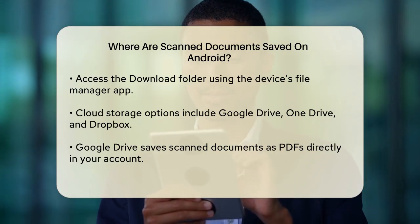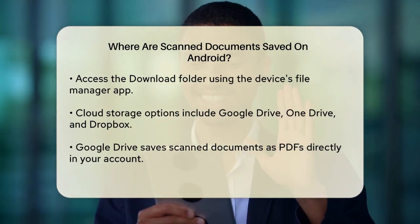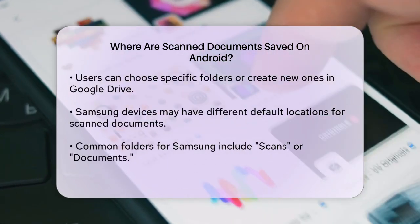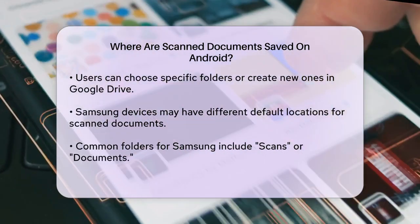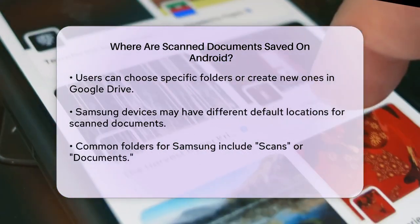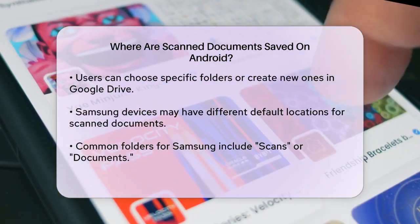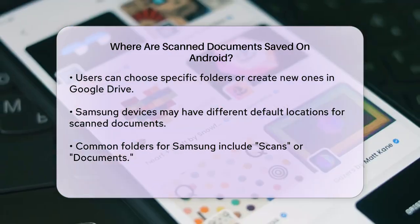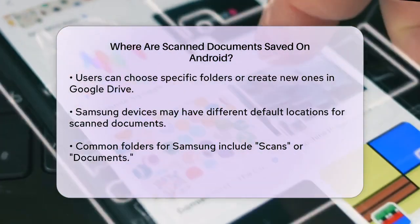On some Android devices, especially Samsung phones, the default scanning app might save documents in different locations. For example, it could save them in the device's internal storage under folders like Scans or Documents. You can use the built-in File Explorer to navigate through these folders and find your scanned documents.